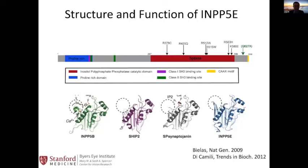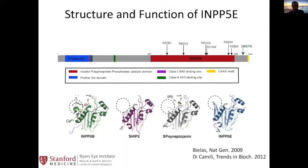INPP5E is an inositol 5-phosphatase. The protein domain structure has a proline-rich domain at the N-terminus and a phosphatase domain at the C-terminus. Mutations in the 5-phosphatase domain of INPP5E cause Joubert syndrome. Loss of the C-terminal tail, which anchors it to the membrane, causes a similar disease called Morum syndrome. A related family member called OCRL causes congenital glaucoma and cataracts, which links to clinical practice.